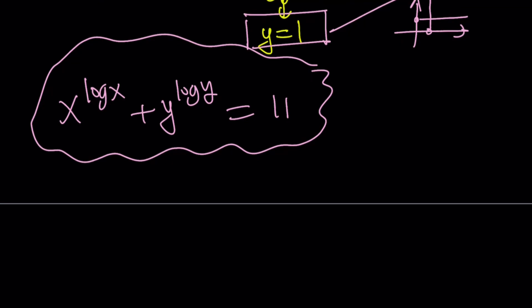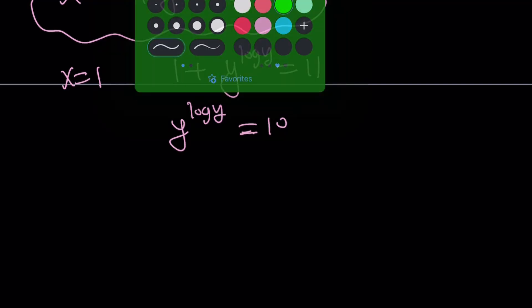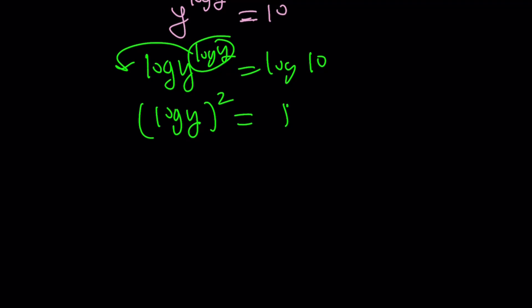So let's go ahead and substitute x equals 1 into the equation. That gives us 1 plus y to the power log y equals 11, which implies y to the power log y equals 10. So this is another equation we need to solve, but we can easily solve this equation by logging both sides. If you log both sides, you get log y times log y, which is log y squared and log 10 is 1 because it's base 10. The common log of it. So this gives us two results.